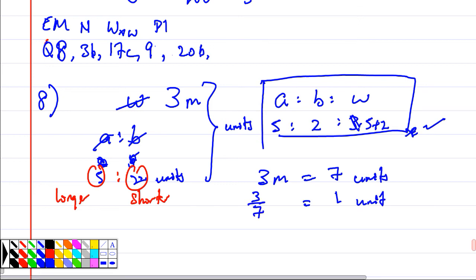Then what do I do? Two units. Two units become 3/7 times 2. I also need to find 5 units. 5 units is